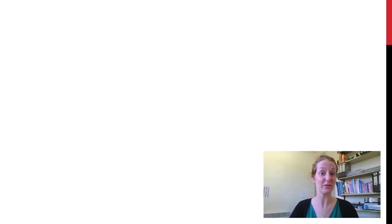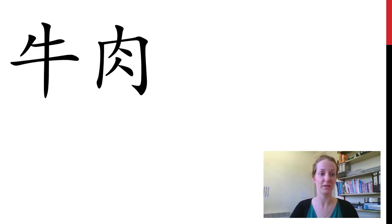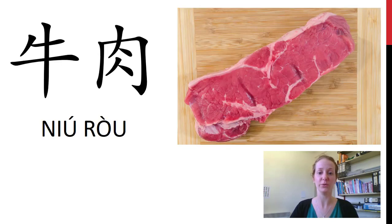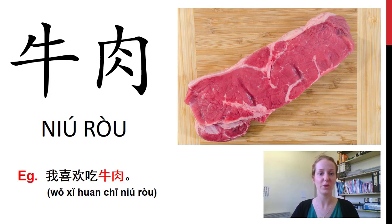Now we've got lots of different types of meats. Let's start with beef. We know the animals, so let's combine them together. 这是牛肉. 牛肉. 我喜欢吃牛肉.